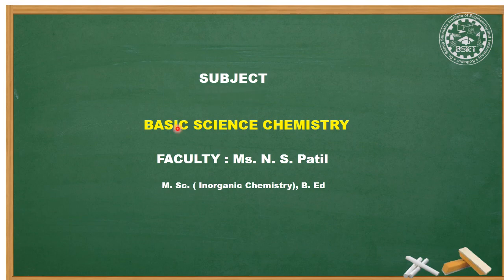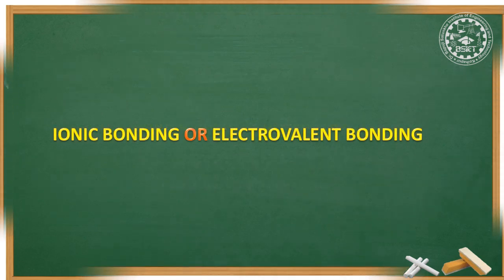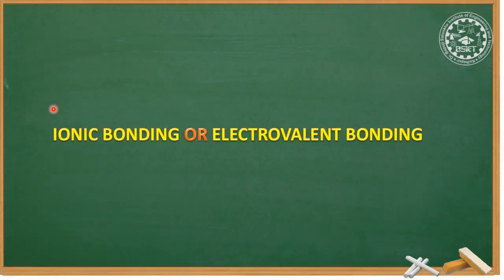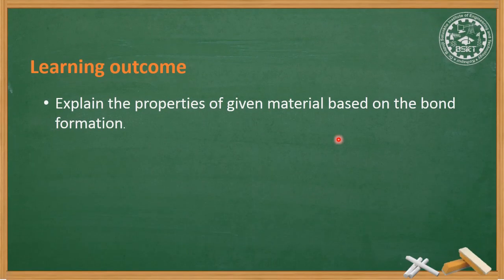We are going to discuss the subject basic science chemistry. I am Miss Enes Patil, and I will be conducting today's session on ionic bonding, also known as electrovalent bonding. The learning outcome of this concept is that you will be able to explain the properties of a given material based on bond formation.